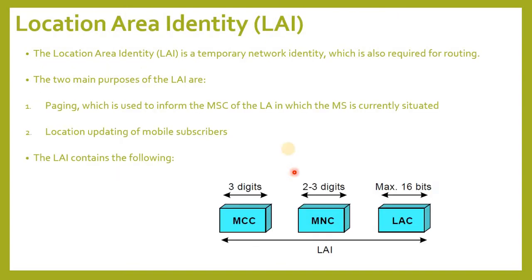Location Area Identity — LAI. The LAI is a temporary network identity which is also required for routing. The two main purposes of the LAI are: first, Paging — used to inform the MSC of the Location Area (LA) in which the MS is currently situated; and second, Location Updating of Mobile Subscribers. The LAI contains: MCC — Mobile Country Code, MNC — Mobile Network Code, and LAC — Location Area Code. The maximum length of LAC is 16 bits, enabling 65,536 different location areas to be defined in one PLMN.